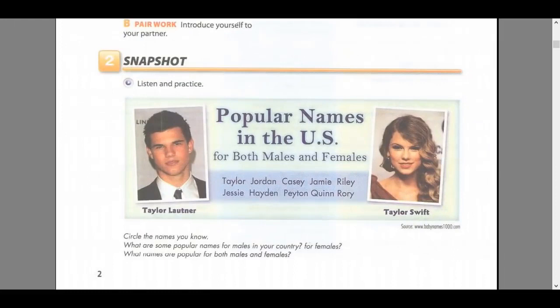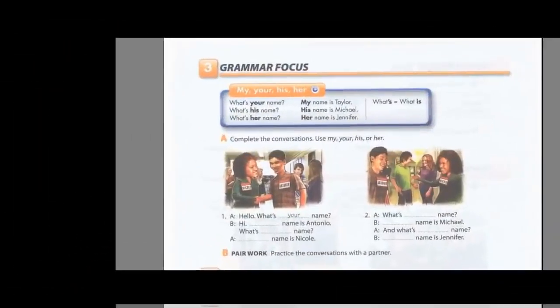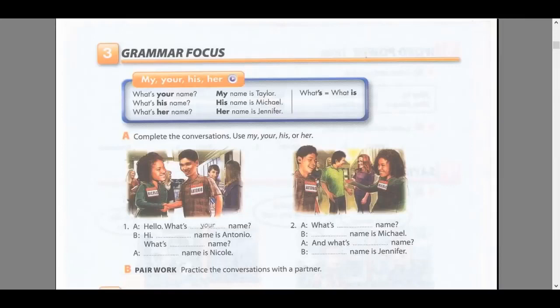Page 2, Exercise 2, Snapshot: Popular names in the U.S. for both males and females. Listen and practice: Taylor, Jordan, Casey, Jamie, Riley, Jesse, Hayden, Peyton, Quinn, Rory. Page 3, Exercise 3, Grammar Focus: my, your, his, her. What's your name? My name is Taylor. What's his name? His name is Michael. What's her name? Her name is Jennifer.